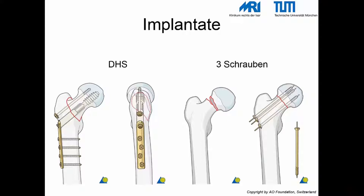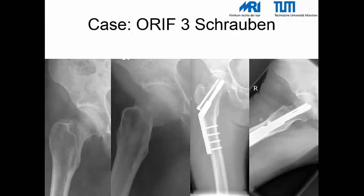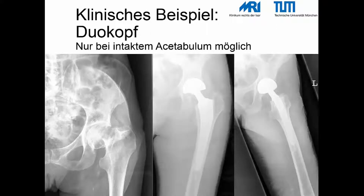Diese Abbildungen zeigen typische Implantate zur Versorgung von Schenkelhalsfrakturen. Links ist eine dynamische Hüftschraube zu erkennen – der Begriff Dynamik ergibt sich aus der Beweglichkeit der Schenkelhalsschraube im Plattenlager. Rechts sind drei kannulierte Schrauben zu erkennen. Röntgenbilder zeigen exemplarisch die Versorgung einer Schenkelhalsfraktur mittels dreier kannulierter Schrauben sowie mittels dynamischer Hüftschraube. Wichtig ist, dass die gezeigte bipolare Femurkopfprothese nur bei intaktem Acetabulum möglich ist.